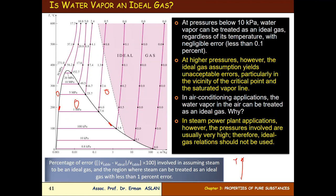In the TV diagram — temperature and specific volume diagram — the curves look like a heel shape. We draw two lines: the upper line is P2 and the lower line is P1, where P2 is greater than P1. At low pressures such as 0.8 kPa or 10 kPa, below 10 kPa, we treat the vapor as an ideal gas.